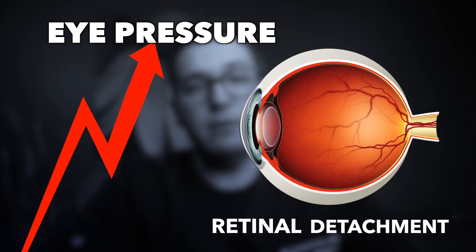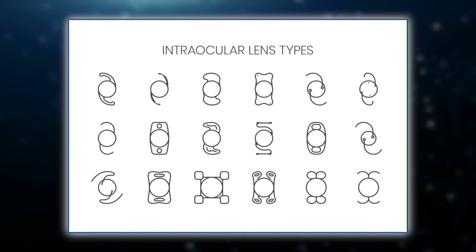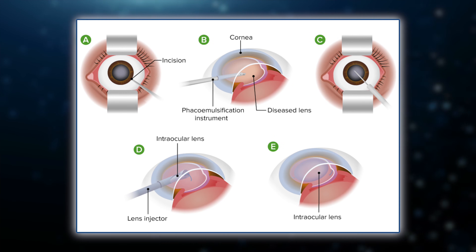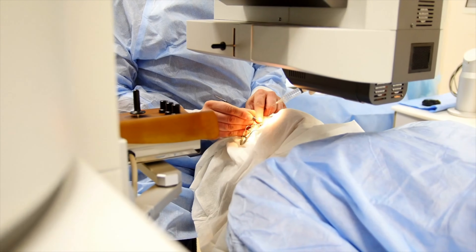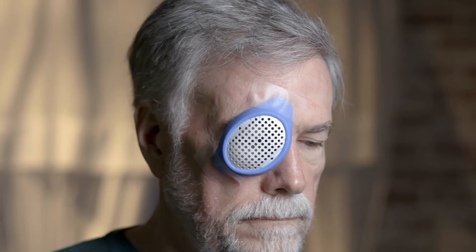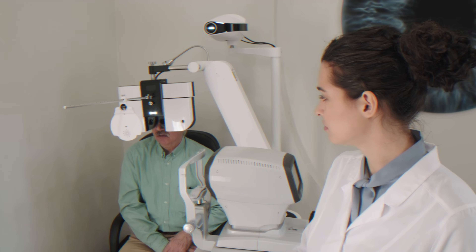Like any medical procedure, there are risks — such as increased eye pressure or retinal detachment — but these complications are rare. Preventative measures during cataract surgery can also reduce the likelihood of PCO; surgeons may choose specific types of intraocular lenses and use techniques designed to minimize the stimulation of residual lens epithelial cells. After a YAG laser capsulotomy, patients generally recover very quickly, and it's important to follow up with your eye doctor to ensure the success of the procedure and monitor for any potential complications.